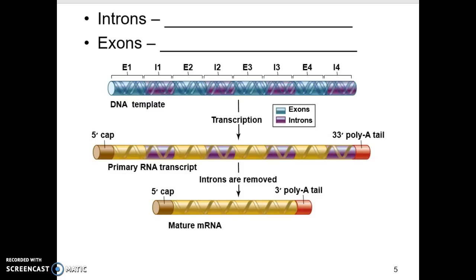The strand then gets repackaged slightly, condensed down into what we call mature mRNA. Notice it's all yellow — this is the exon information. That is what will physically leave your nucleus. It goes out through the nuclear pores and into the cytoplasm of the cell. Specifically, if we're trying to build proteins, it goes to the ribosome, the protein factory.